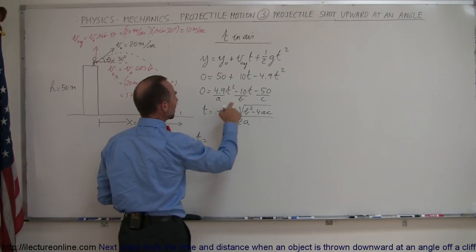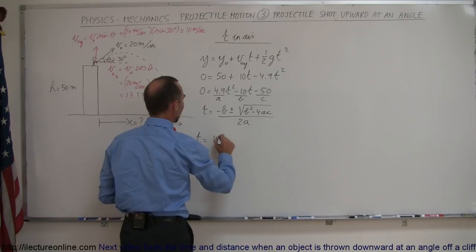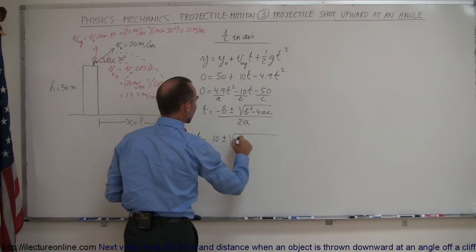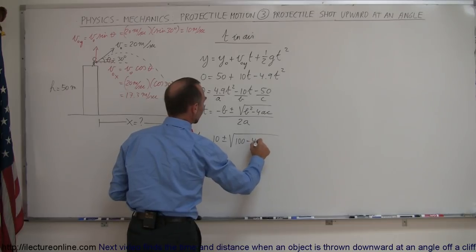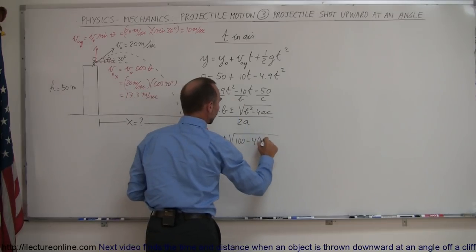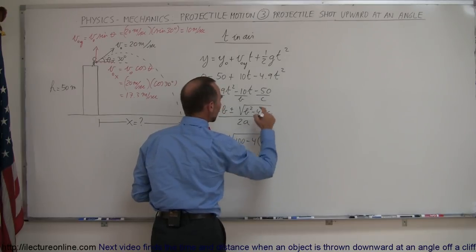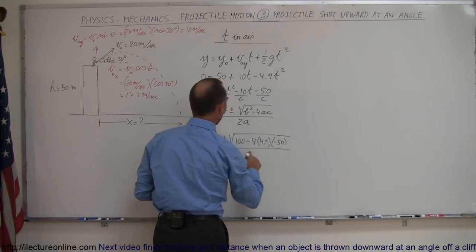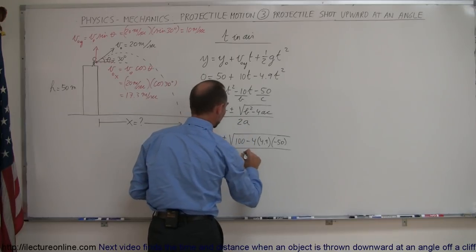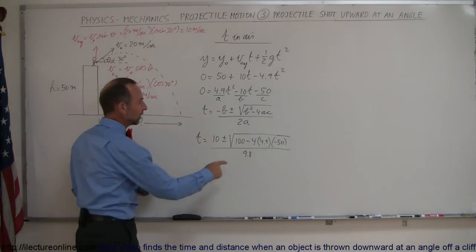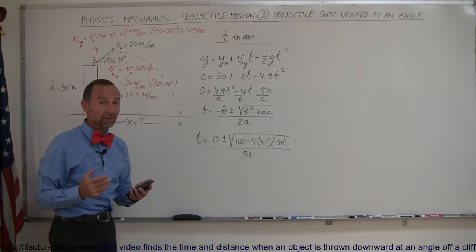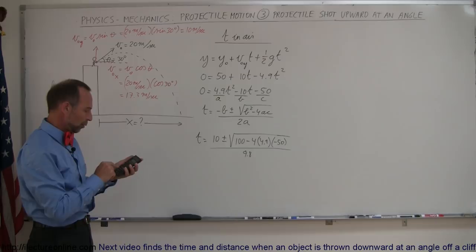So when we plug that into our quadratic formula, we have t is equal to minus b, a minus times a minus 10 is 10, plus or minus the square root of b squared, that would be 10 squared or 100, minus 4 times a, which is 4.9, times c, which is a minus 50. And the whole thing divided by twice a, that would be twice 4.9 or 9.8. Notice that this minus will negate this minus, make the second term in the radical positive quantity.